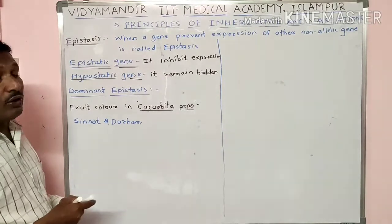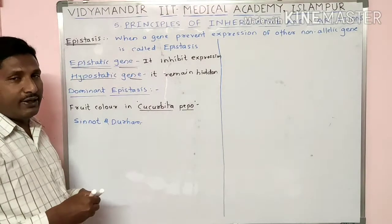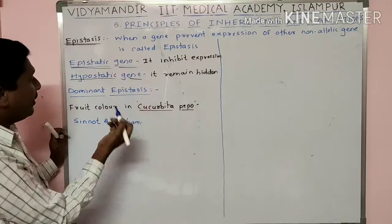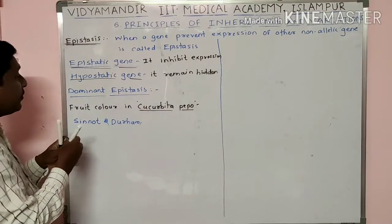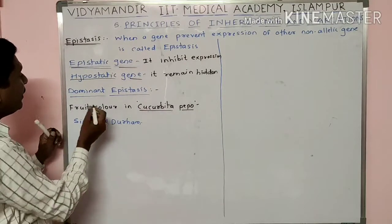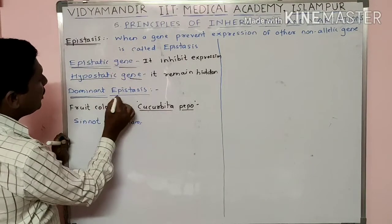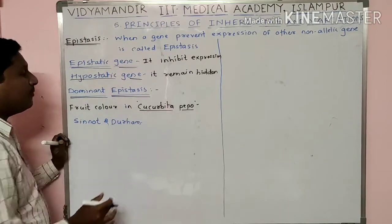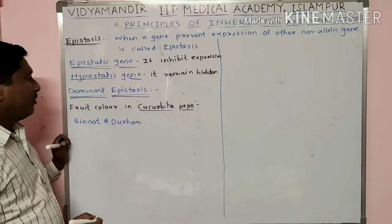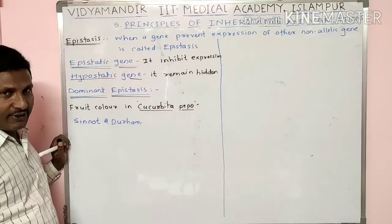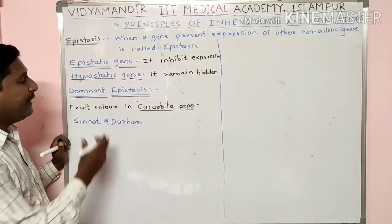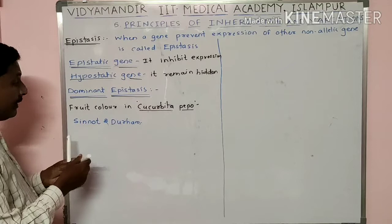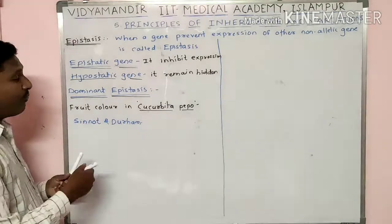The epistatic gene may be dominant or may be recessive. If the epistatic gene is dominant, it is called dominant epistasis, and if the epistatic gene is recessive, it is called recessive epistasis. An example of dominant epistasis is fruit color in summer squash.